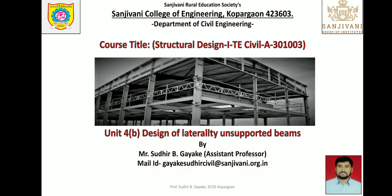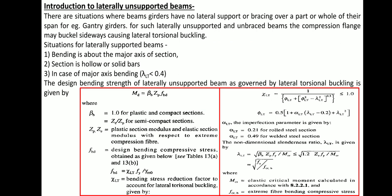Examples of laterally unsupported beams include gantry girders and plate girders, where lateral support for the cross-section is typically absent. There are situations where beams and girders have no lateral support or bracing over part or the whole of their span. For such laterally unsupported and unbraced beams, the compression flange may buckle sideways, causing lateral torsional buckling.